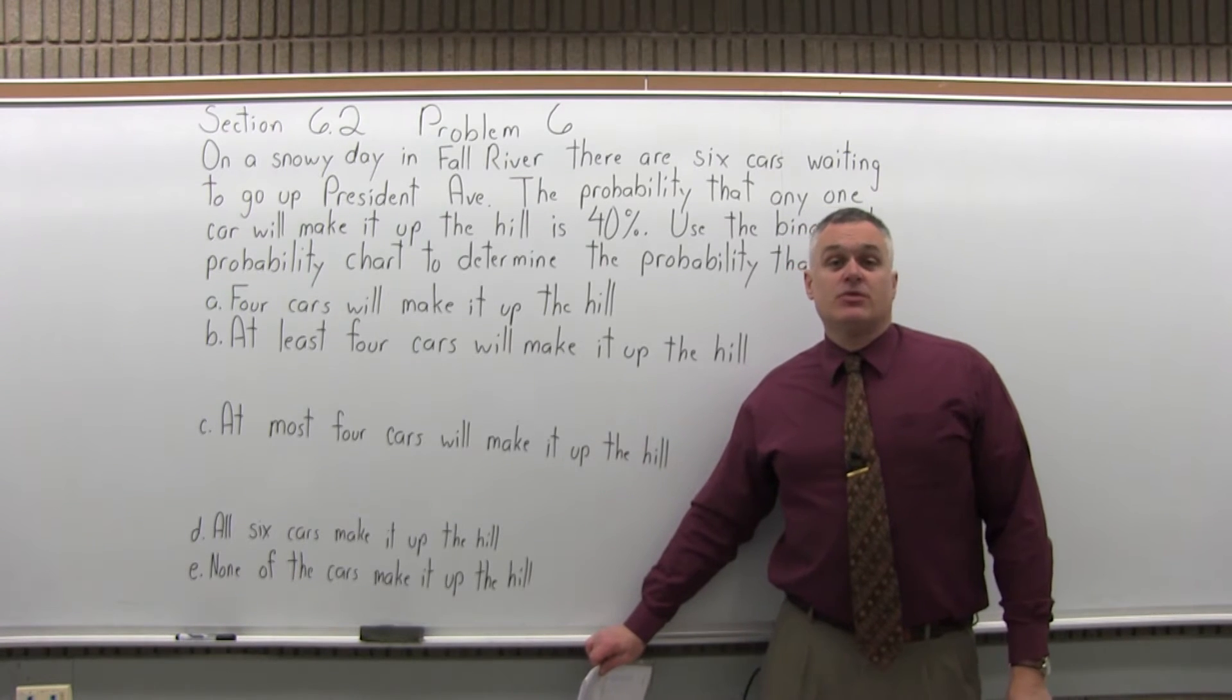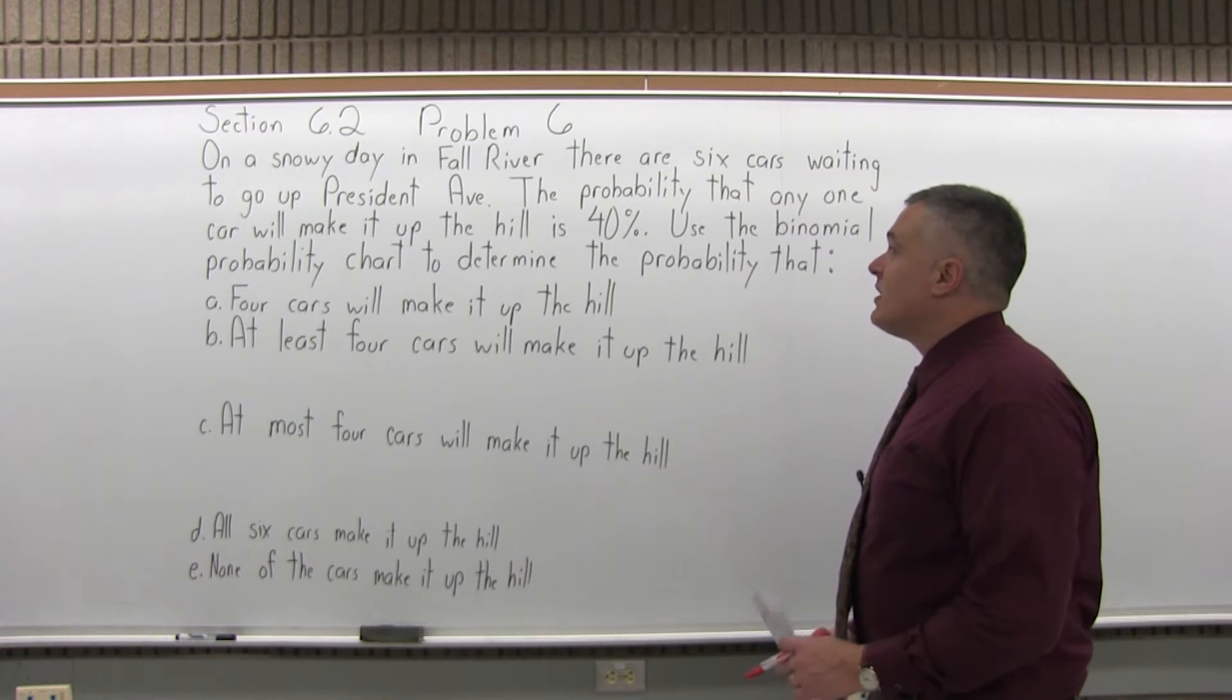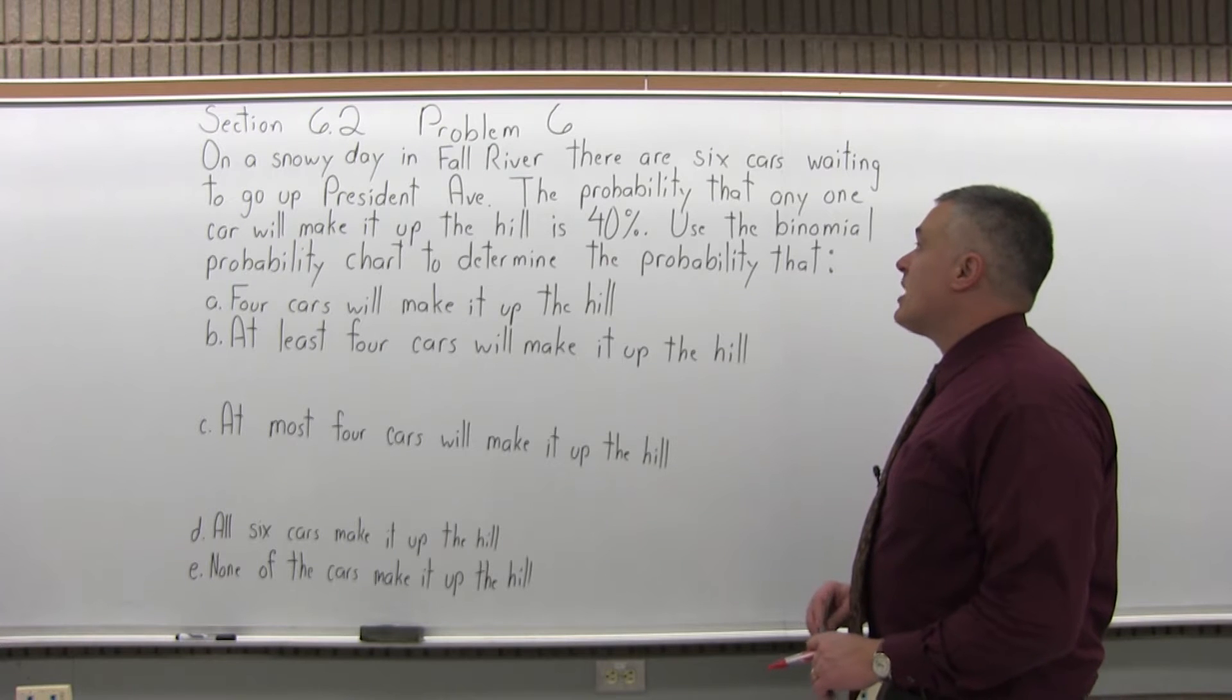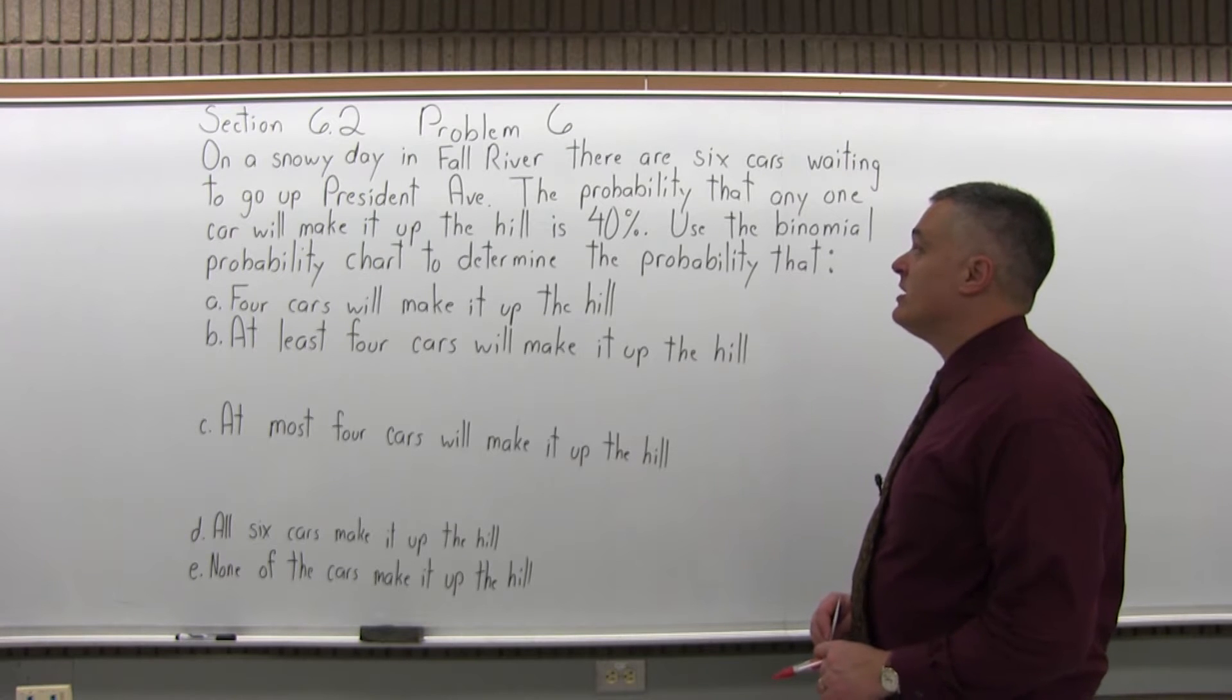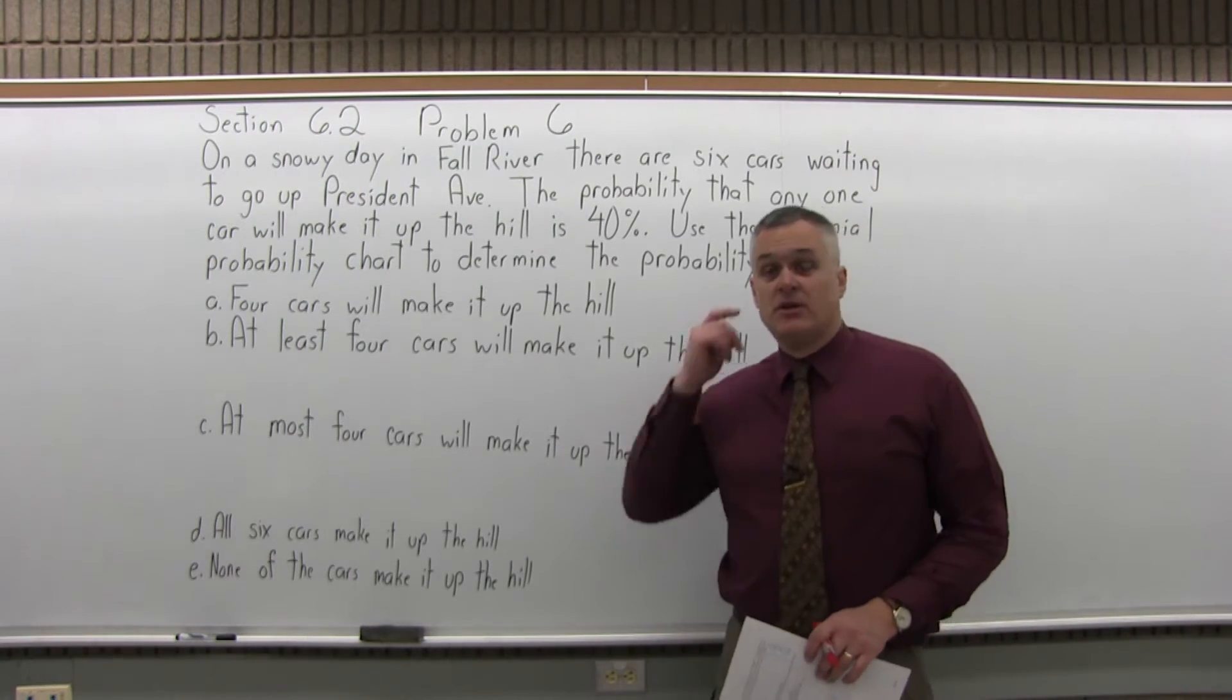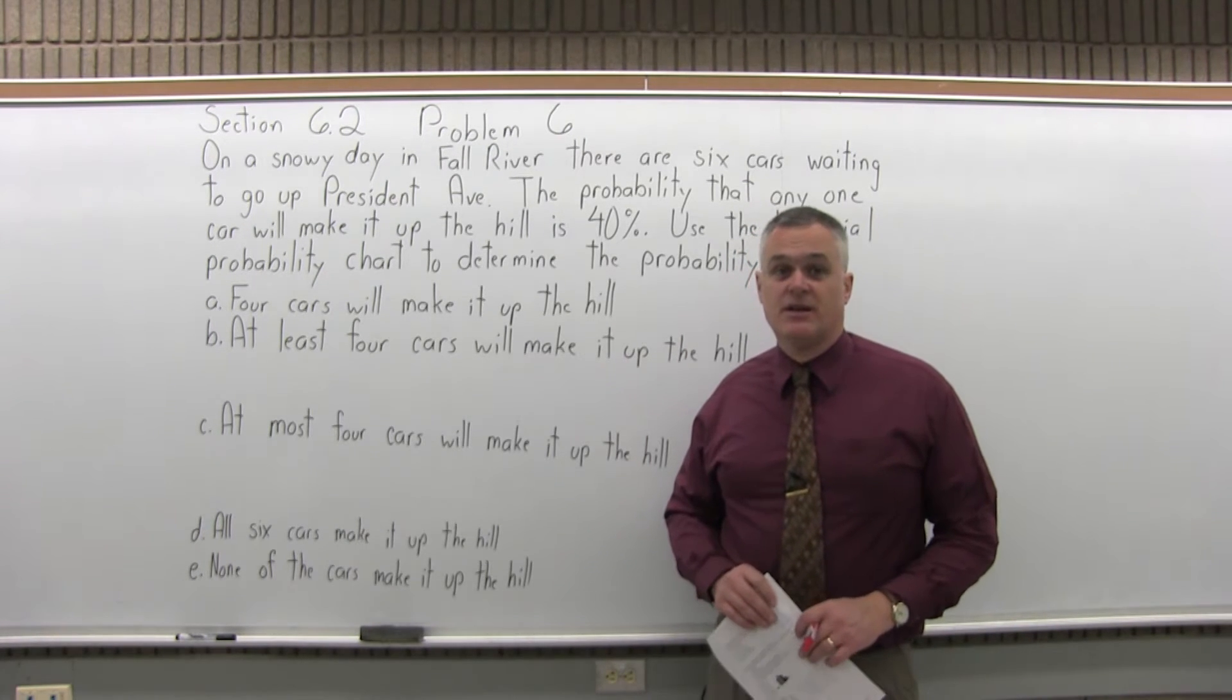This is Section 6.2, Problem 6. It says, on a snowy day in Fall River, there are six cars waiting to go up President Ave. The probability that any one car will make it up the hill is 40%. Use the Binomial Probability Chart to determine the probability that A, four cars will make it up the hill, B, at least four, C, at most four, D, all six, and E, none of them.